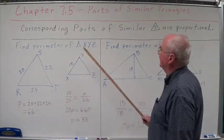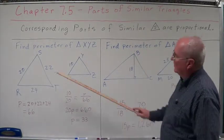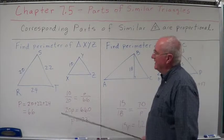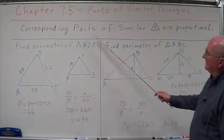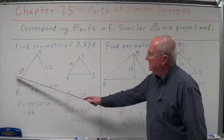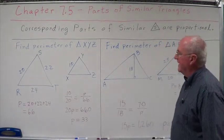Find the perimeter of triangle XYZ. We're given triangle RST, we're given the three sides, we're given triangle XYZ, and we're given one side. I'm going to assume that these are corresponding sides, the 10 and the 20 are corresponding sides.